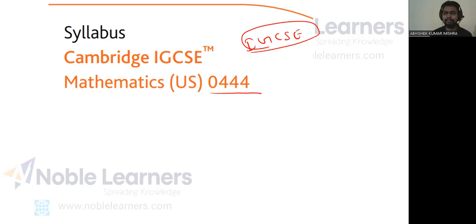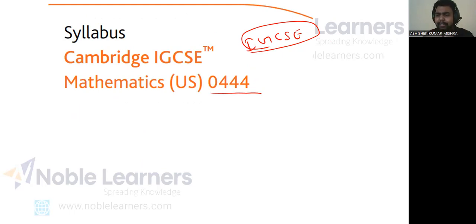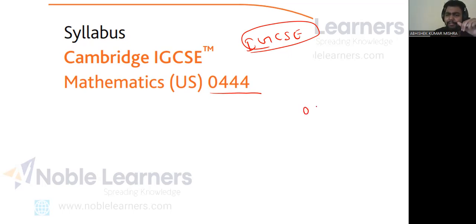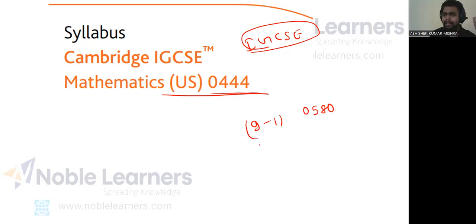So these are the differences — or rather, the lack thereof. The difference between these Mathematics courses is based on your location and your purpose. If you are planning to move to the US, take 0444 so your child is familiar with the mathematical terminology used there. The most famous one is Mathematics 0580. If you are from the UK, take 9-1. If you are from America, take 0444. If you are neither from the UK nor America, go with 0580 or International Mathematics 0607.